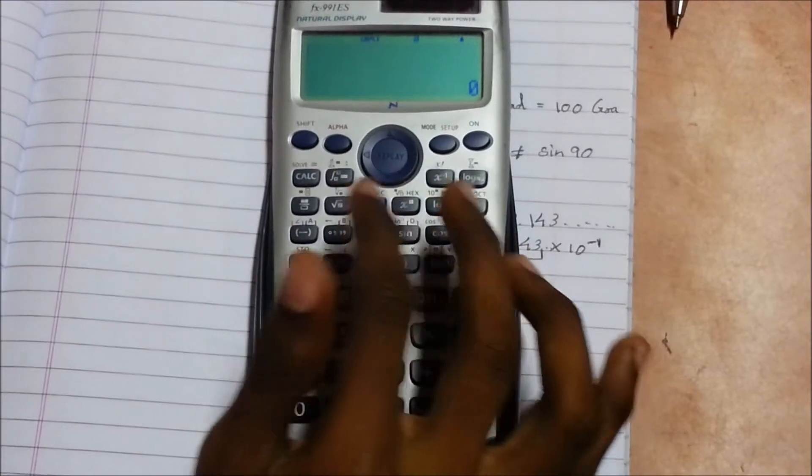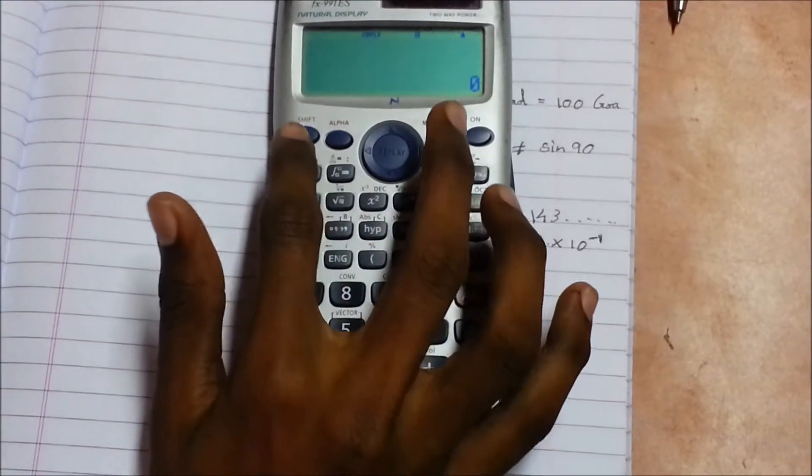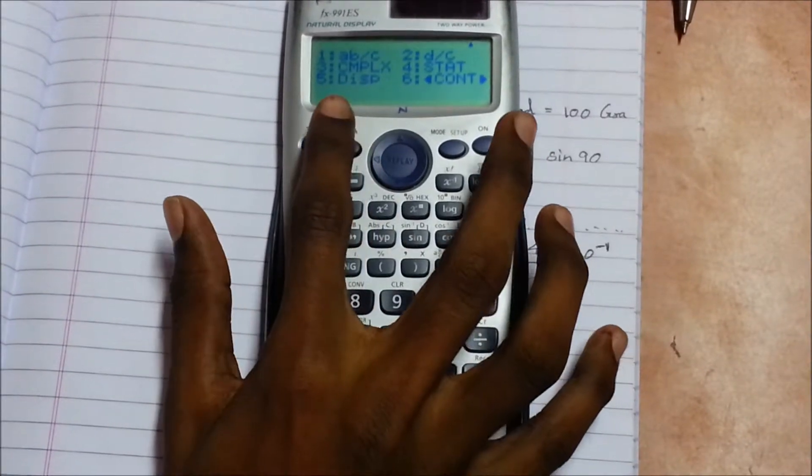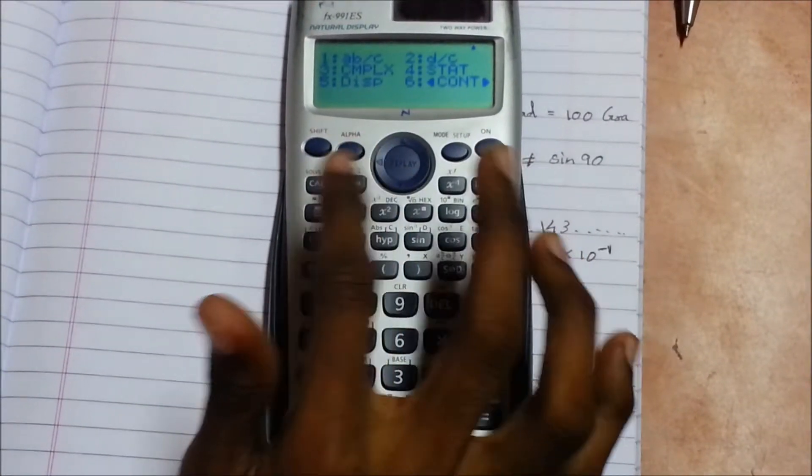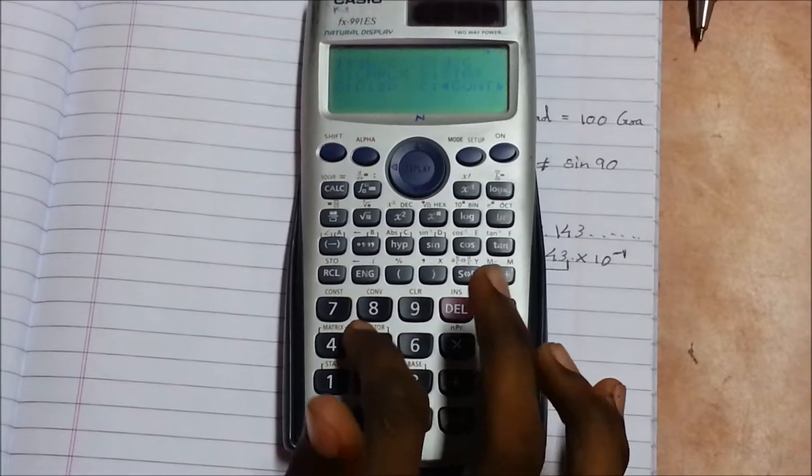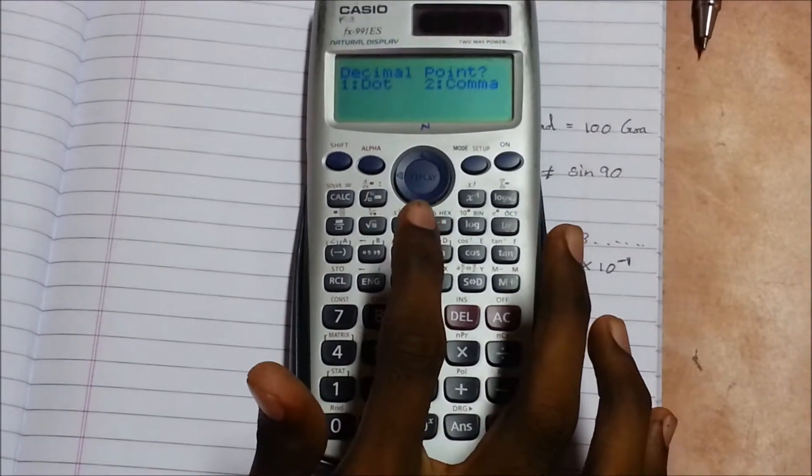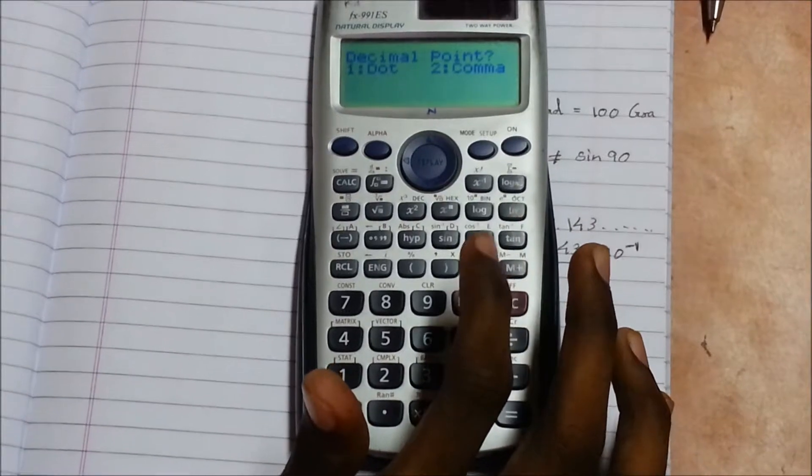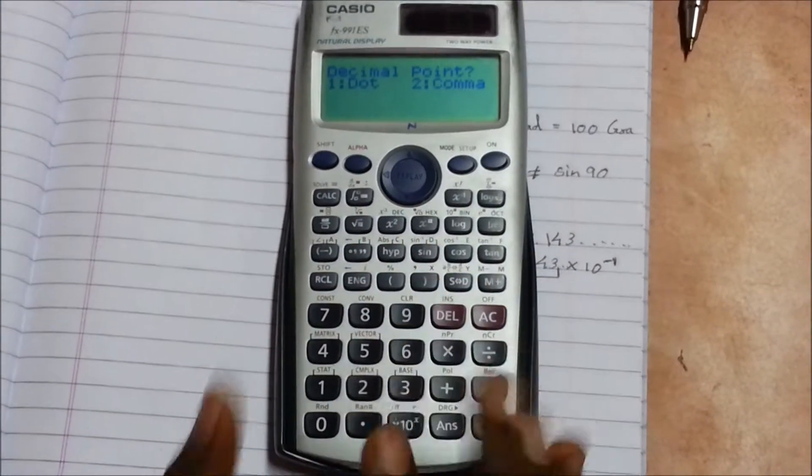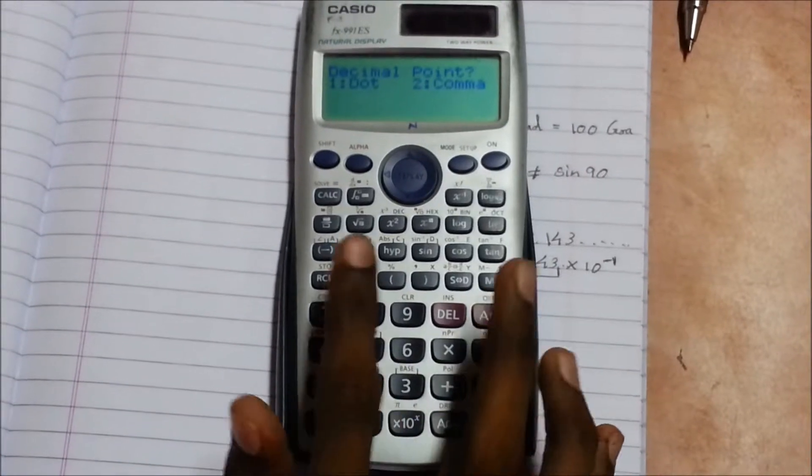Press shift setup, down arrow. Here you can see the next function is display. Press the 5, and here it shows a dot and a comma. Normally the calculator is in dot mode.